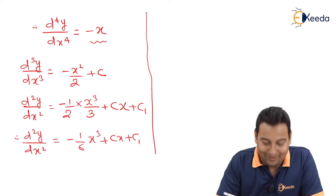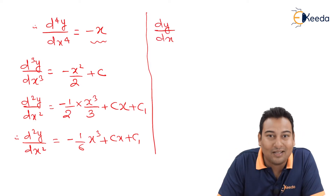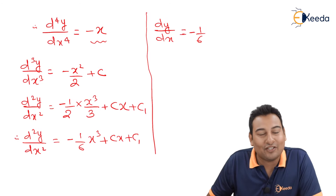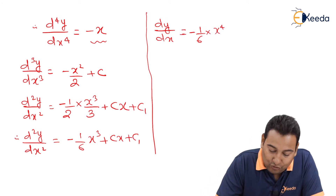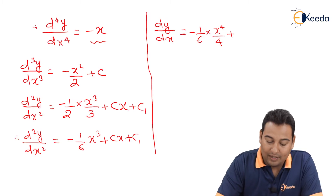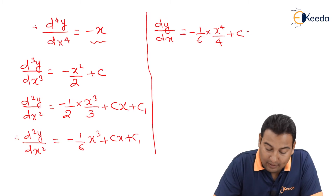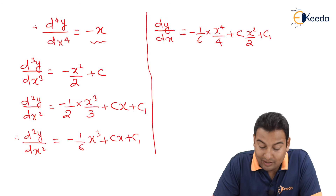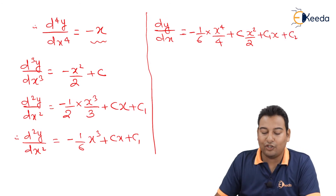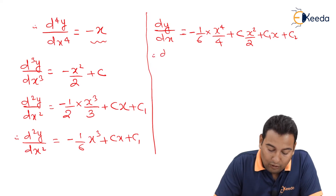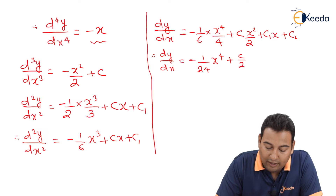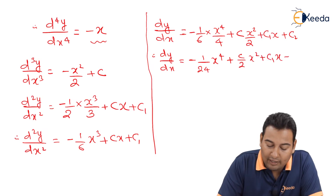We are left with two more derivatives, so two more integrations. One more integration gives dy/dx: minus 1/6 is constant, x³ integrates to x⁴/4, plus C constant gives x²/2, plus C1 constant integrates to C1·x, plus one constant of integration C2. Therefore dy/dx equals minus x⁴/24 plus C·x²/2 plus C1·x plus C2.